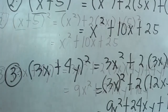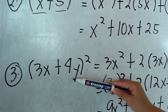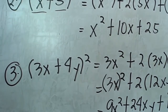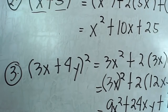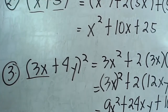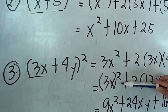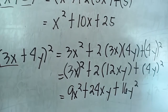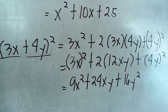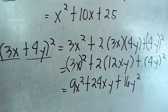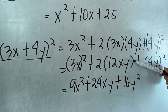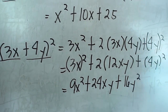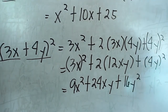Our last example is (3x plus 4y) squared. First we square the first term, which is 3x, so 3x squared. Then the second one is twice the product of the first and the last term. We identify the first and the last term: 3x and 4y. Multiply it by 2. Then the last one is square the last term, which is 4y squared.